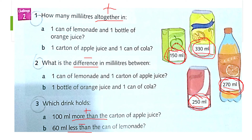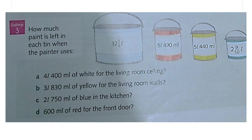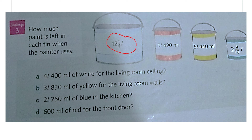This is the last slide. Look at this question: how much paint is left in each tin? The painter uses 4 liters 400 milliliters of white paint for the living room ceiling. The white paint tin is 12 and one-quarter liters. Remember: one-half liter equals 500 milliliters, and one-quarter liter equals 250 milliliters — I already covered this in a previous video. Please watch that video before starting today's task.